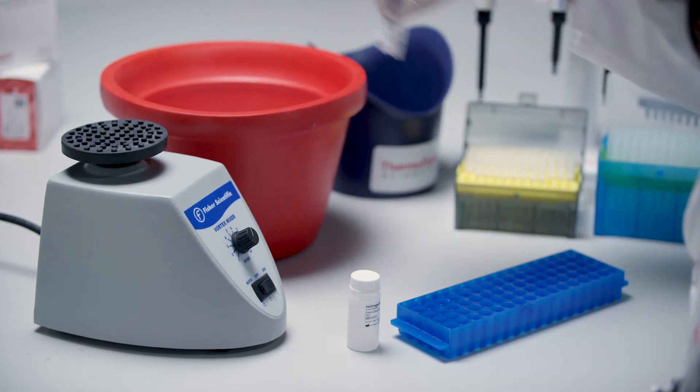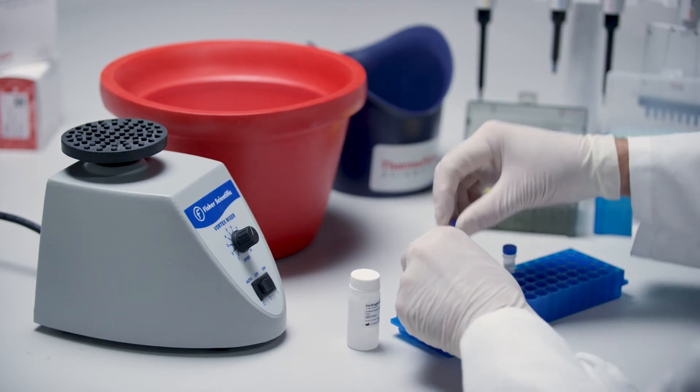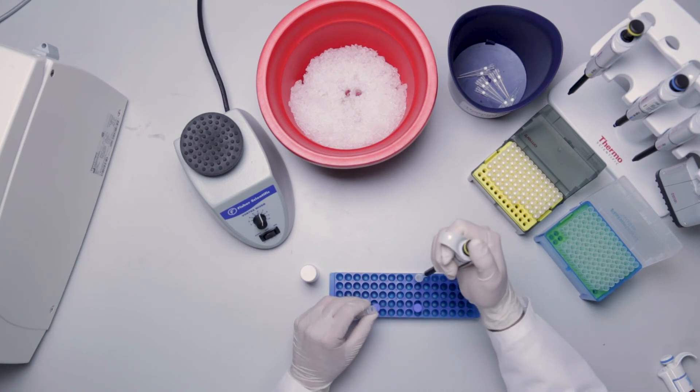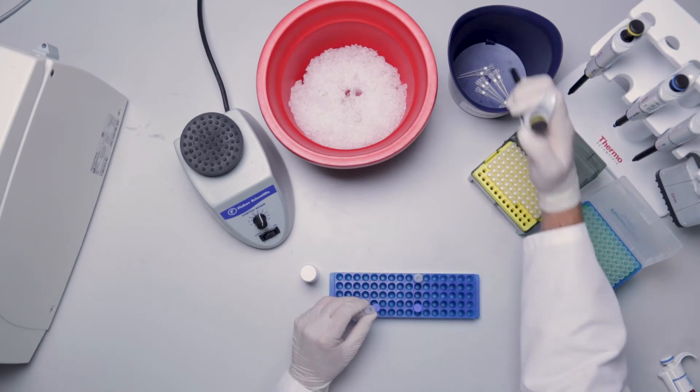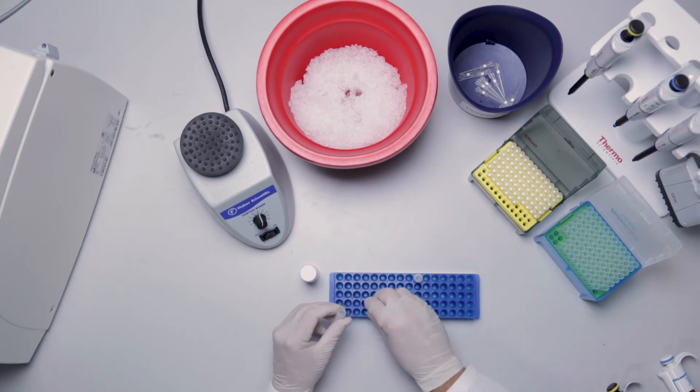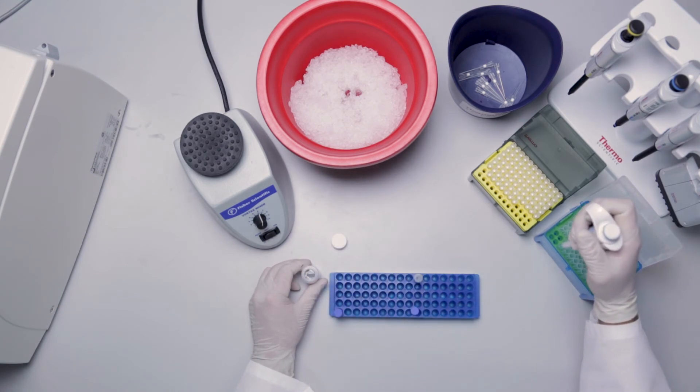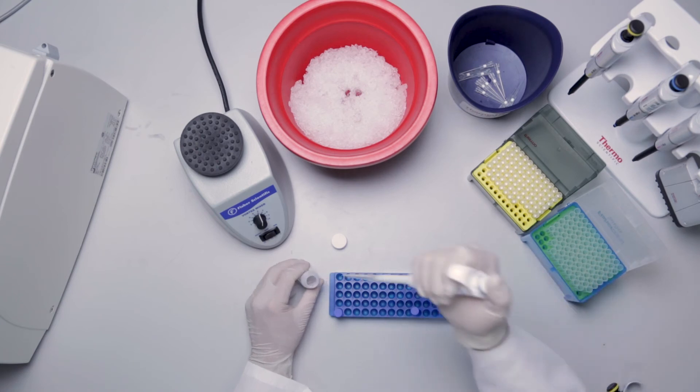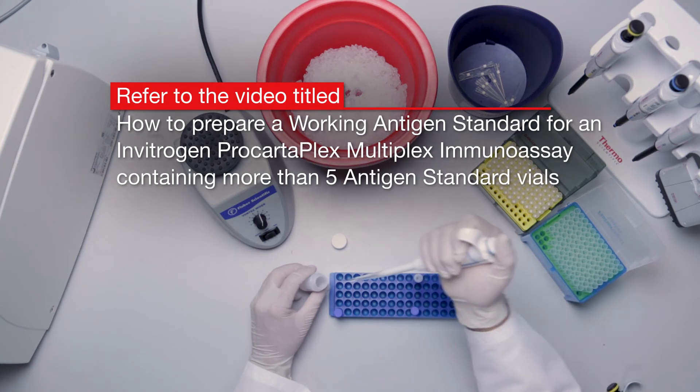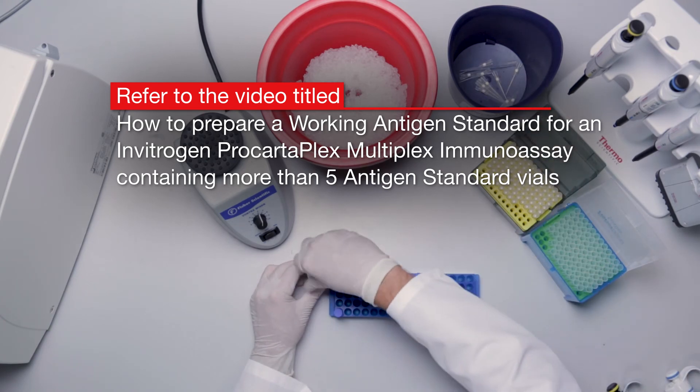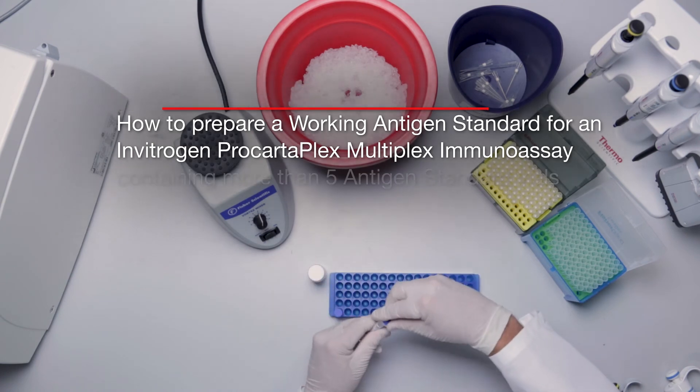Pool the entire contents of each vial into one of the vials and fill with sample type specific buffer to a total volume of 250 microliters. Pooling of antigen standard vials to prepare the working antigen standard must never exceed 250 microliters. For details on how to pool more than five antigen standard vials while not exceeding 250 microliters, refer to the video titled how to prepare a working antigen standard for an Invitrogen ProCartaPlex multiplex immunoassay containing more than five antigen standard vials.